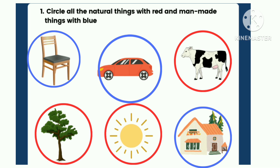Next, we can circle the natural things in red color. Cow — cow can breathe, so it is a natural thing. Natural things are living things. Cow, tree, and sun are examples of natural things. Next, let's look at man-made things — things that man can make.